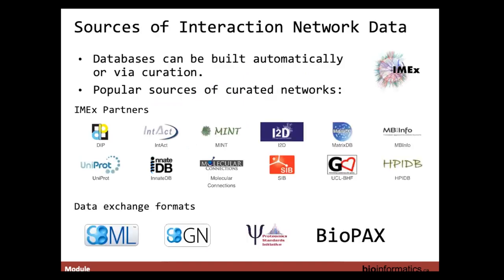Large-scale protein-protein interaction screening techniques have created a large volume of interaction data available through various molecular interaction databases. The first step in performing protein-protein interaction network analysis is building the network. You can source data from your own experimental work, extract it manually from the literature, or — most easily — derive it from protein-protein interaction databases, which curate interactions from the experimental literature.